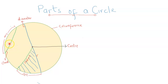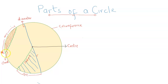The next thing we are going to consider is segments. A segment is a portion within a circle that's bounded by an arc and a chord. This shaded portion here forms a segment because it's bounded by a chord and an arc. A chord divides a circle internally into two segments. The smaller part is called the minor segment, and the larger portion is called the major segment.